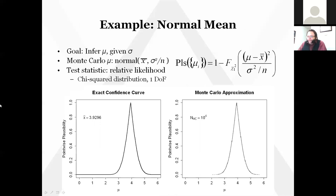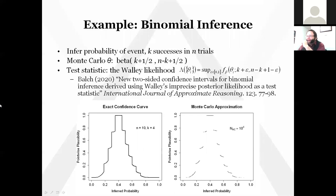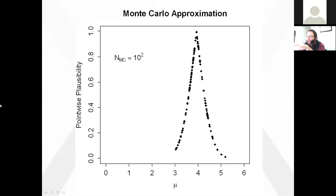Here's a simple example of a confidence curve that we want to sample randomly — just normal mean inference where you know the variance. You've got some sample data, and as our test statistic for deriving plausibilities, we're going to use relative likelihood, which has a chi-squared distribution with one degree of freedom. The Monte Carlo approximation looks almost exactly like the original confidence curve because I'm using 10^4 samples. Here's what it looks like with fewer samples — it really is a random sample.